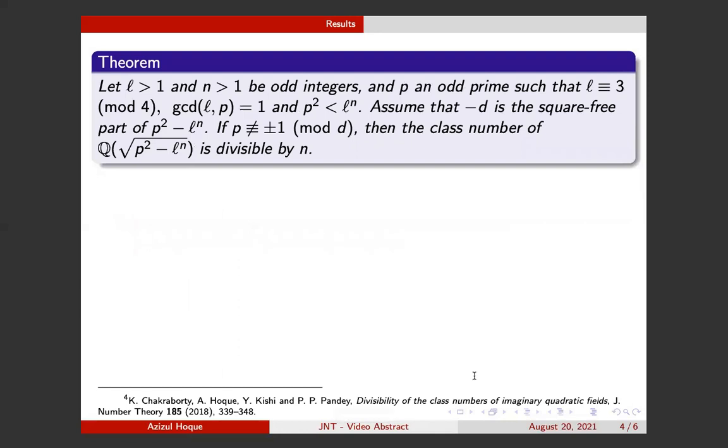One of the main ingredients in the proof of the main theorem is this theorem. For any odd integers ℓ > 1 and n > 1, let p be an odd prime satisfying these conditions. Suppose that -d is the square-free part of p² - ℓⁿ.